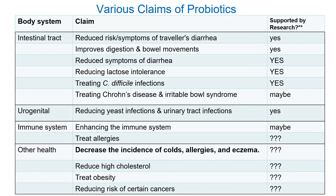For immune system claims, Activia was part of a lawsuit making claims about the immune system — I think they lost and had to pay out, and they backtracked to more hypothetical language. There are also claims about probiotics and mental health, reducing incidence of colds, allergies, and eczema, which I highly doubt unless you're applying microorganisms directly to your nose or skin. Maybe someday we'll have a bacterial spray for skin to help alleviate eczema. We're still at a very early stage of understanding this — with 1,000 organisms, it's very complex.